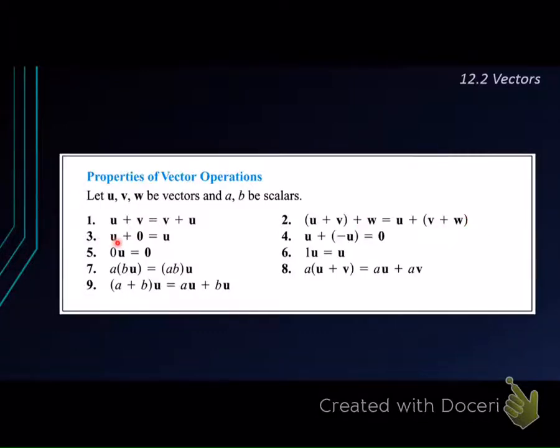Number three, if we have a vector u plus a zero vector, we will always get back the vector u. Number four, if we have u plus the negation of u, that is negative u, then the summation of these two will give us a zero vector. Not only zero number, but a zero vector.